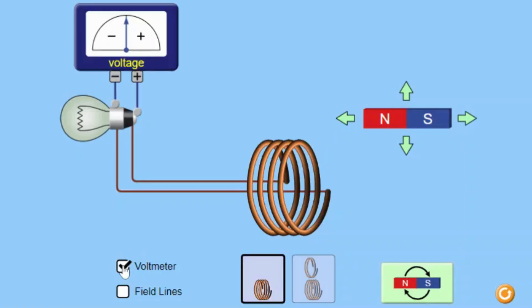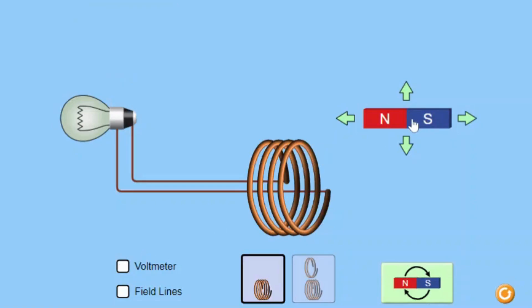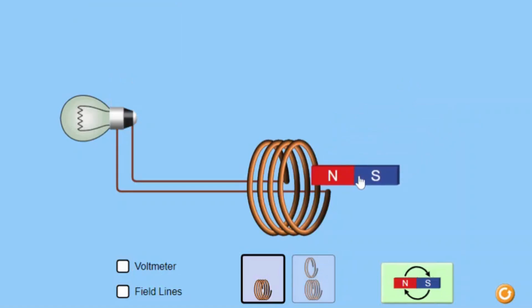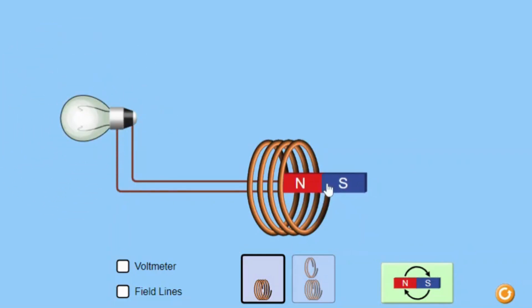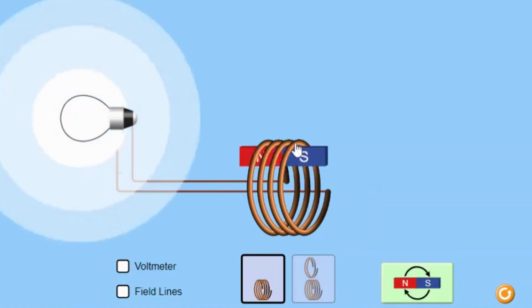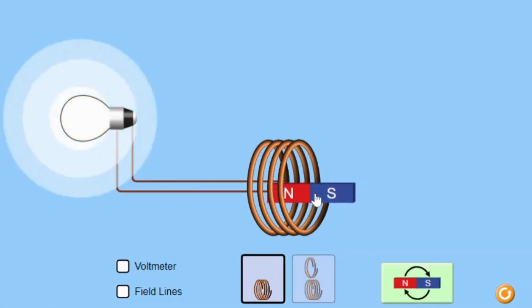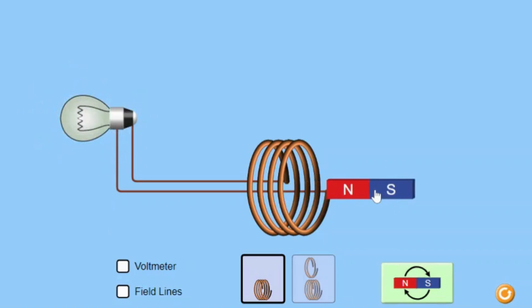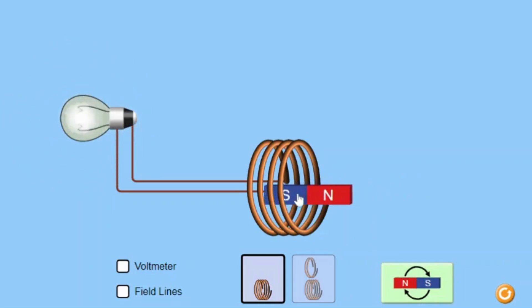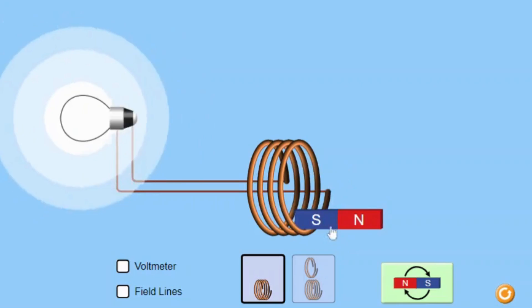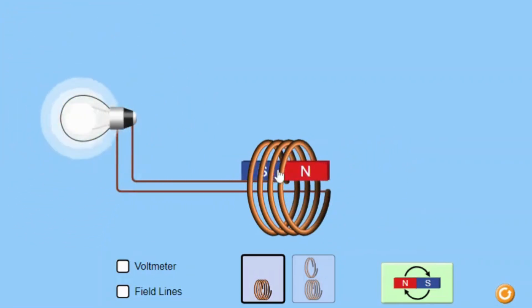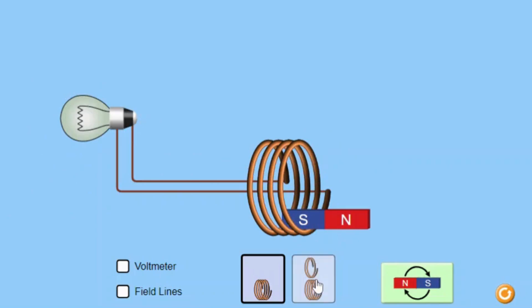The Faraday's Law simulation is an interactive educational tool designed to help students understand the principles of electromagnetic induction, specifically how a changing magnetic flux can produce a flow of electricity. This simulation allows students to investigate the relationship between magnetic flux, coil turns, and the speed of the magnet, and observe how these factors affect the brightness of a bulb. By providing a hands-on and visual approach, the simulation enhances students' understanding of Faraday's Law of Induction.